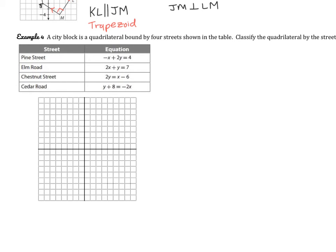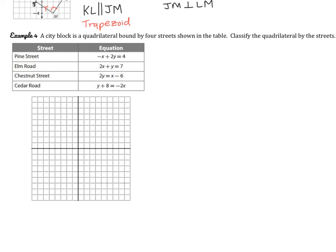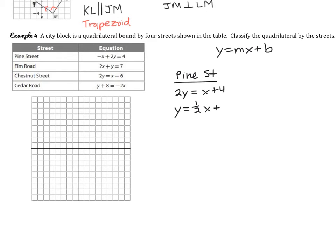A city block is a quadrilateral bounded by four streets shown in a table. To classify the quadrilateral, let's start by graphing our streets. Rewriting them in slope-intercept form (Y = MX + B): for Pine Street, adding X and dividing by 2 gives Y equals 1 half X plus 2. So the Y-intercept is at 0, 2 and the slope is 1 half.